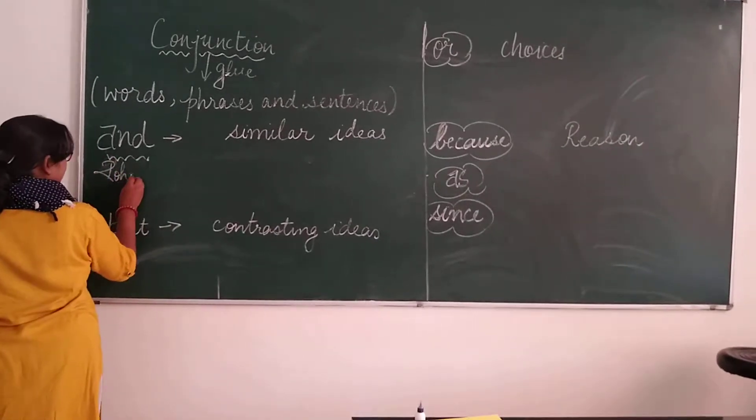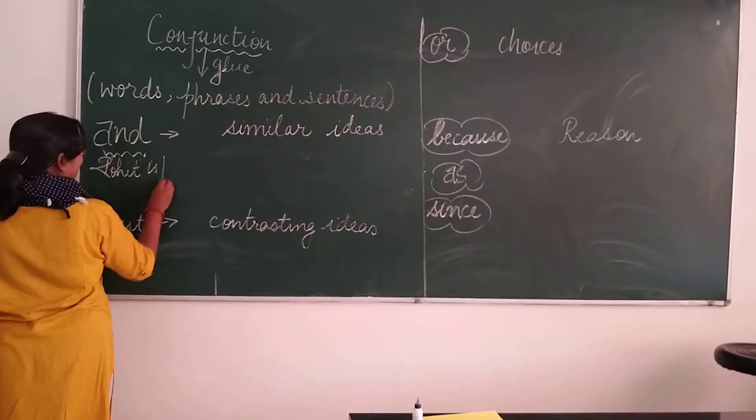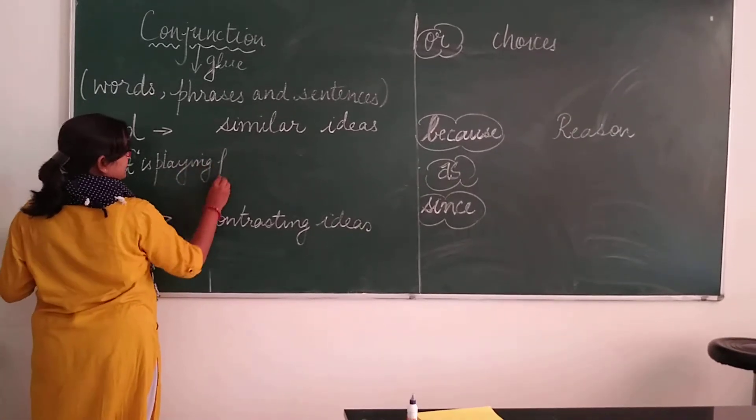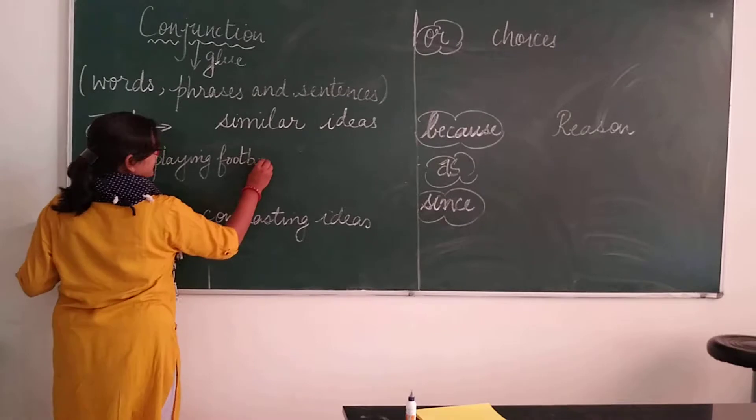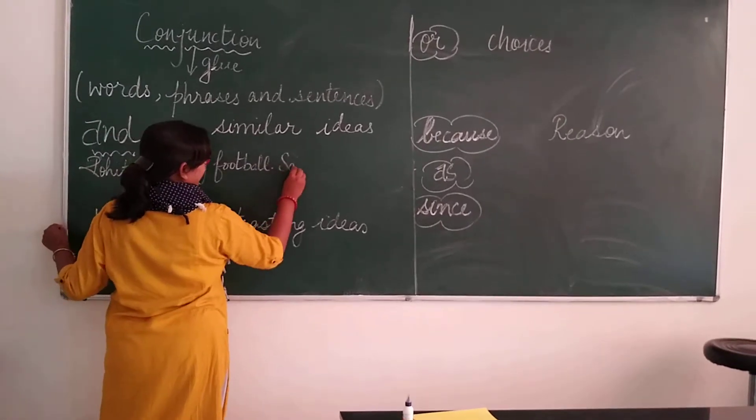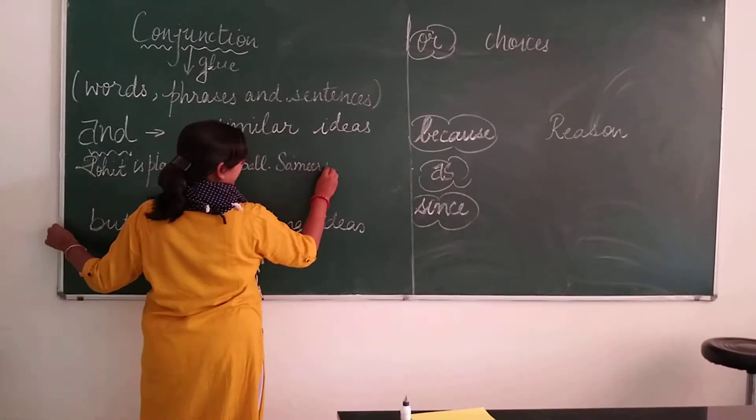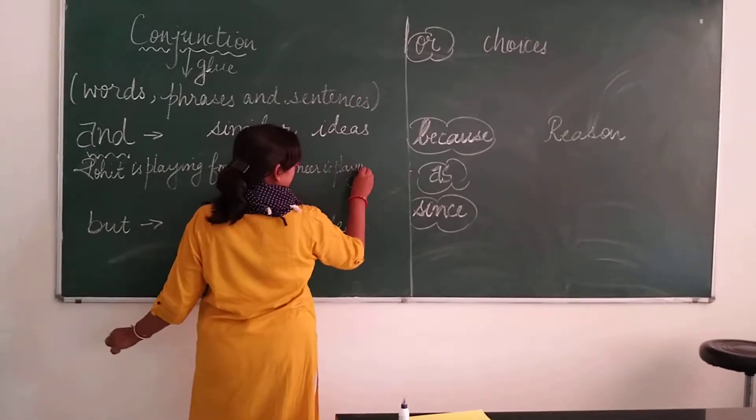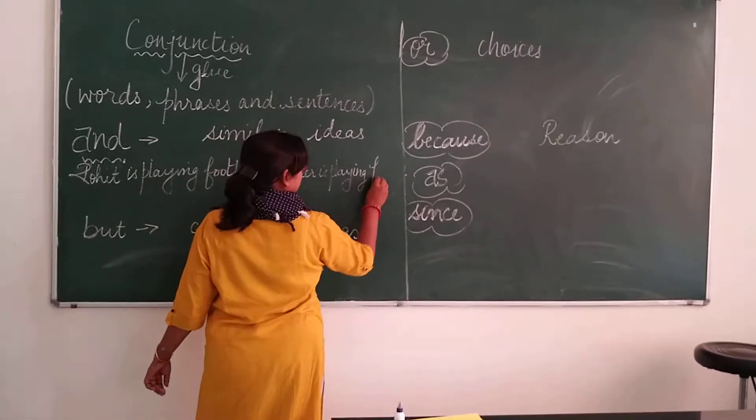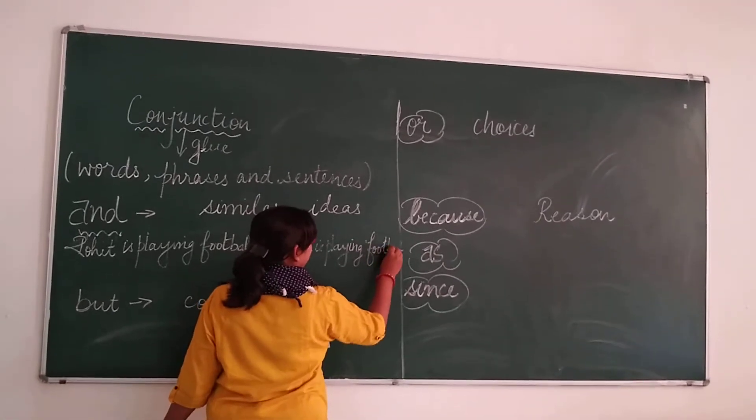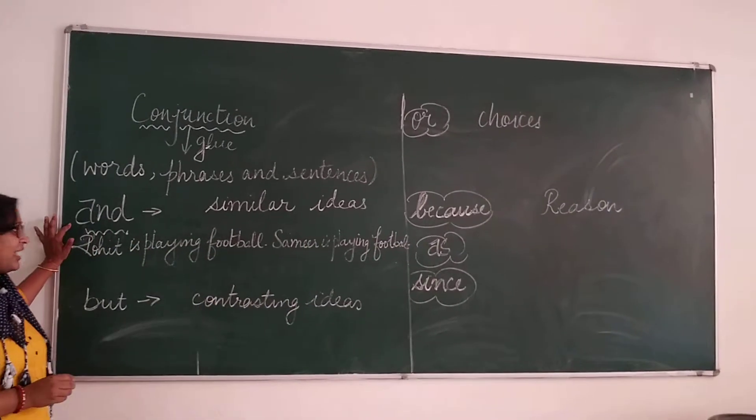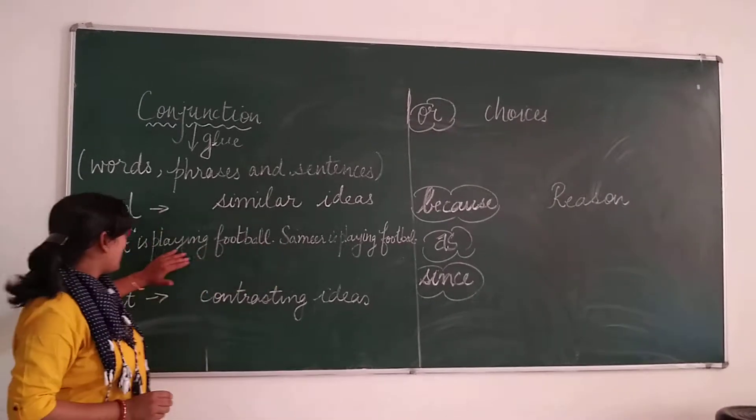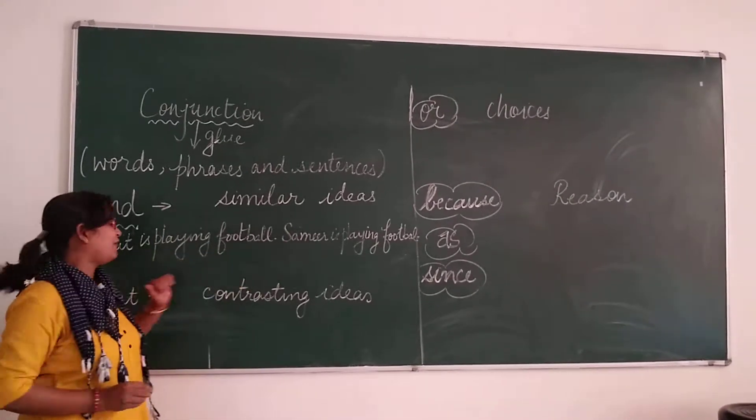Rohit is playing football. Samir is playing football. We can join these two sentences using the conjunction 'and' where Rohit and Samir, both boys, are doing a similar action.